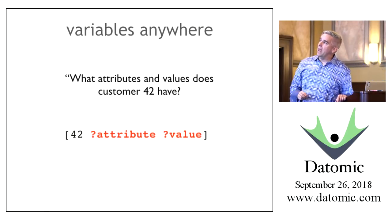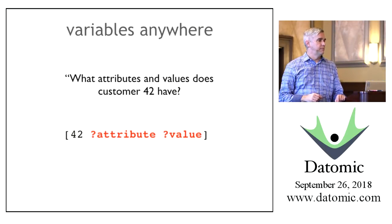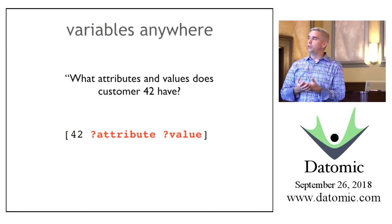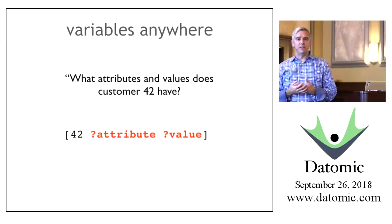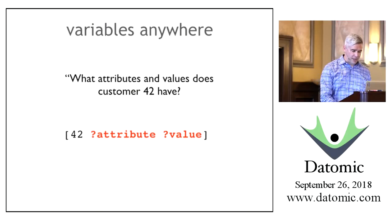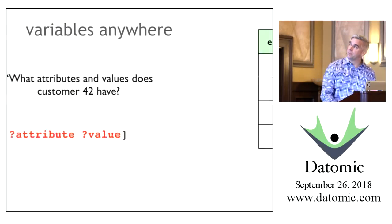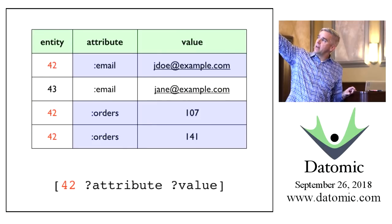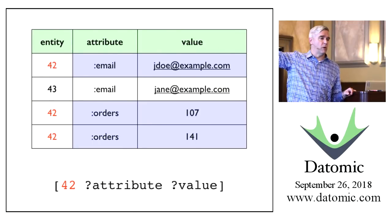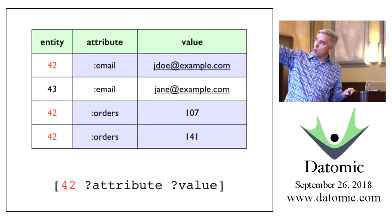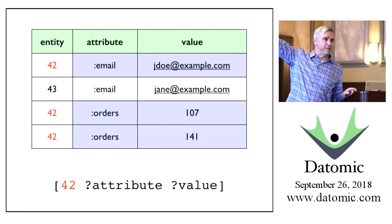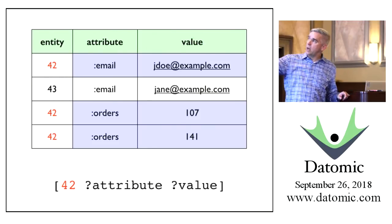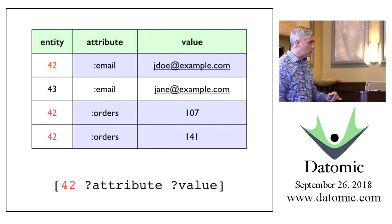Saying entity 42 with both attribute and value as variables means tell me everything about 42—give me your attributes and your values. Now we get back three tuples: email/jdoe, orders/107, orders/141. The fact that orders appears twice is now disambiguated because we're also getting back values. So this binds three tuples: email jdoe, orders 107, orders 141.